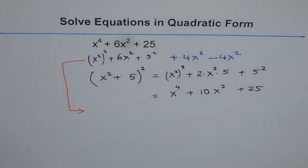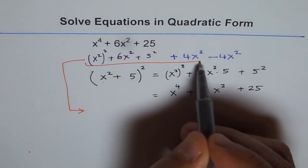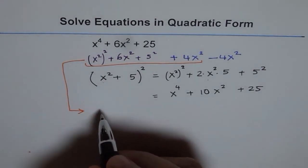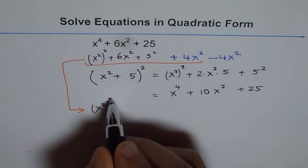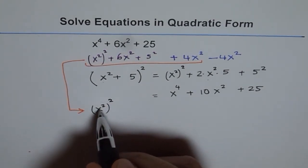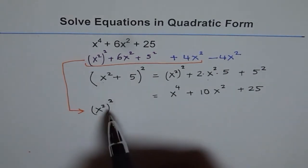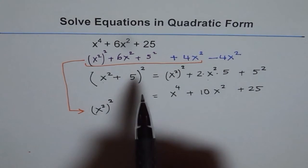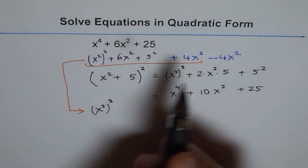Why we did so? That was the reason I explained you in the very beginning. To make it a perfect square of (x^2 + 5)^2, right? So we were short of 4x^2. So we added and subtracted, correct?